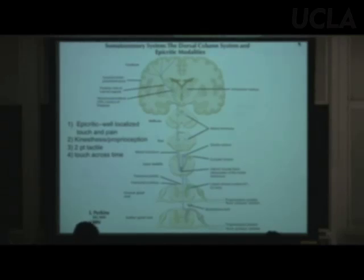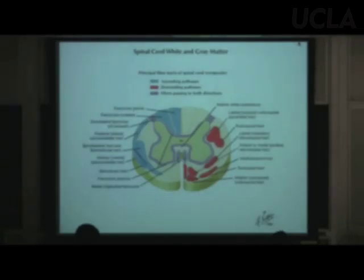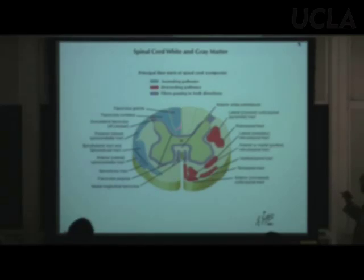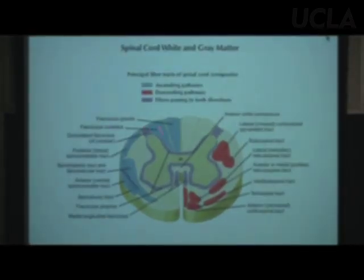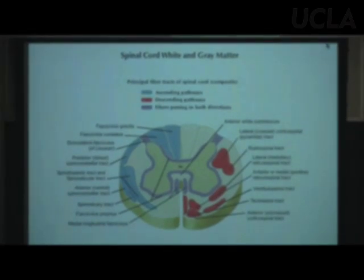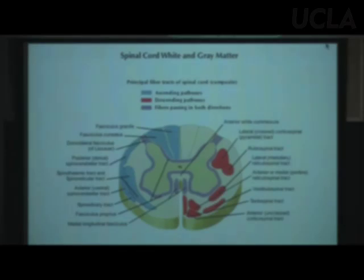To emphasize: axons from the lower body go up in the fasciculus gracilis; from the upper body in the fasciculus cuneatus. A thought question: if a spinal cord section shows both fasciculi, it must be from the upper spinal cord — because if it were lower, the cuneatus wouldn't be there at all.